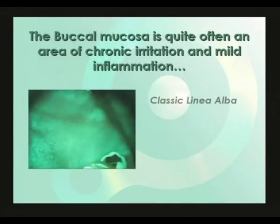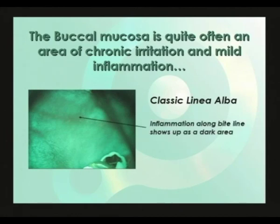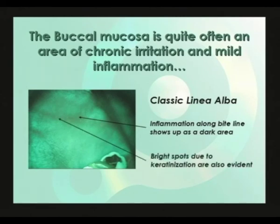The buccal mucosa is quite often an area of chronic irritation and mild inflammation. Here we see a fairly classic presentation of linea alba under VELscope. Under white light you can often see a white line corresponding to keratinized tissue right along the bite line. This can sometimes show up as a bright line under VELscope due to keratin fluorescence, but more typically appears with the associated mild inflammation dominating, showing the area as predominantly dark. Keratin fluorescence can be seen as bright spots along the bite line. Notice the diffuse borders of the inflamed region as it fades into the brighter green of the rest of the buccal mucosa.